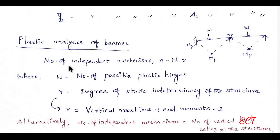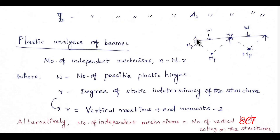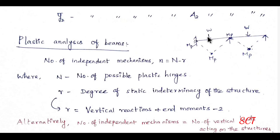The number of independent mechanisms is given by n = N − R, where capital N is the number of possible plastic hinges. Plastic hinges form at fixed supports and at points of maximum moment under load. For this continuous beam, there are 4 possible plastic hinges.